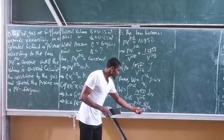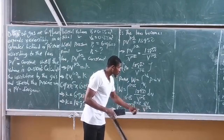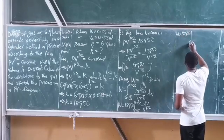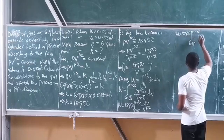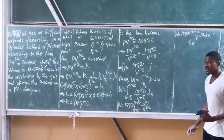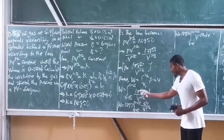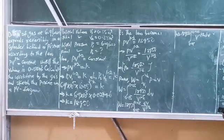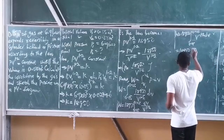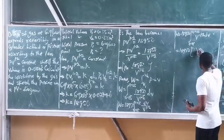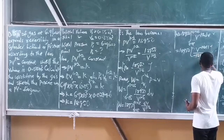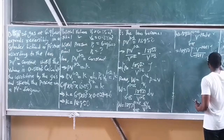By the rules of indices, V / V^1.2 = V^(−1.2). So work done = 18,950 × integral from 0.05 to 0.08 of V^(−1.2) dV. Integrating V^(−1.2) gives V^(−1.2 + 1) / (−1.2 + 1) = V^(−0.2) / (−0.2), evaluated with limits from 0.05 to 0.08.